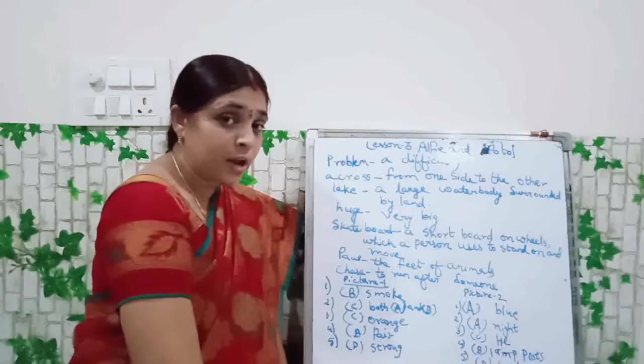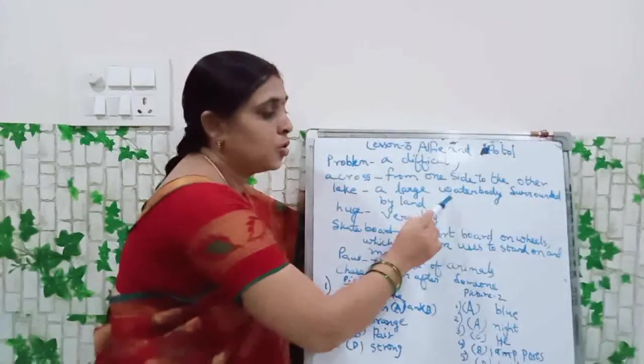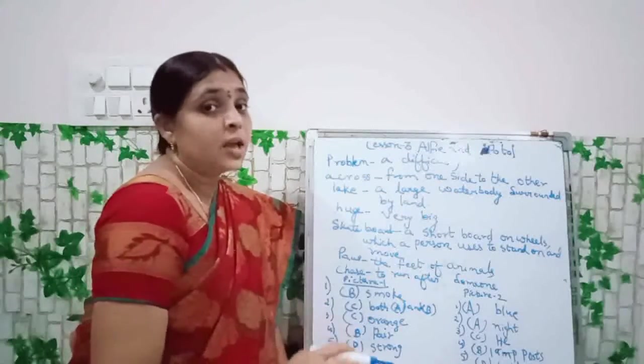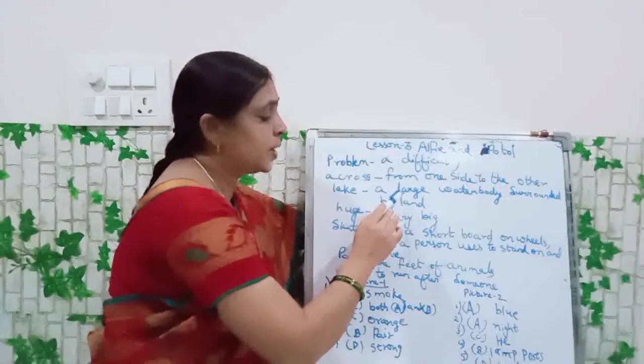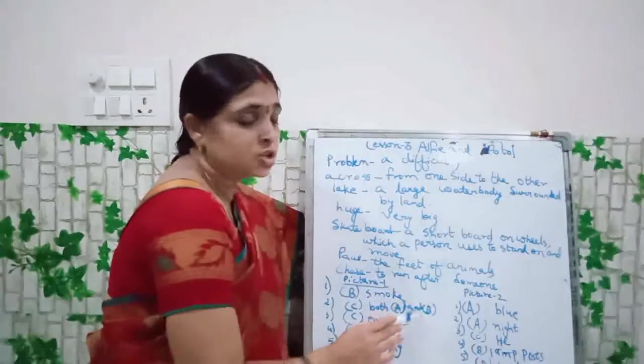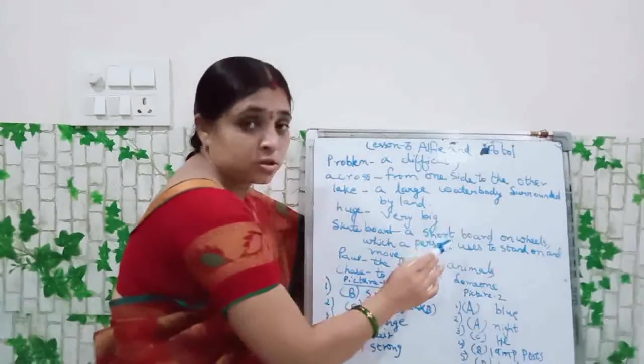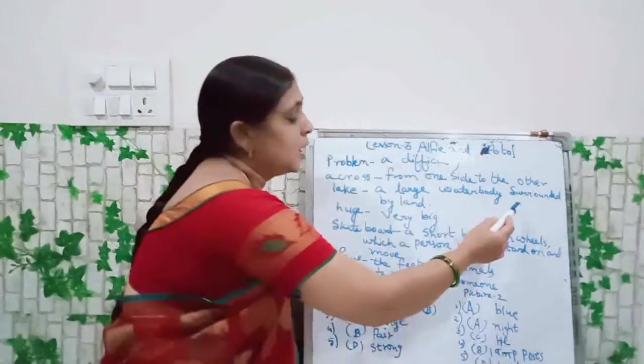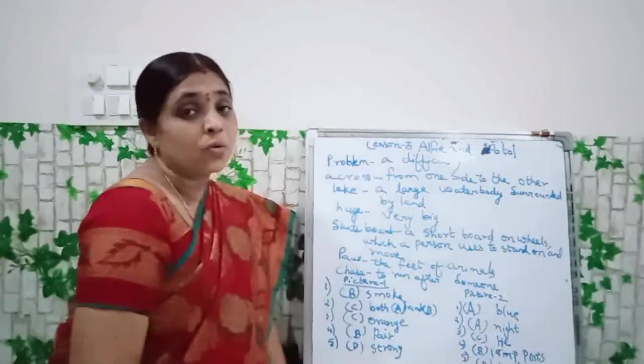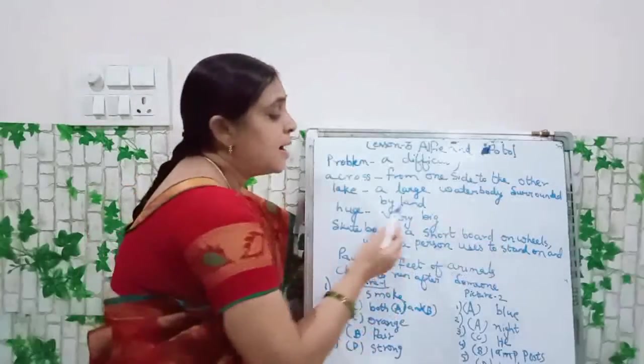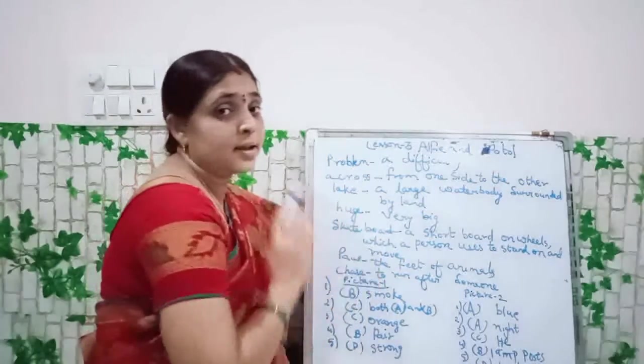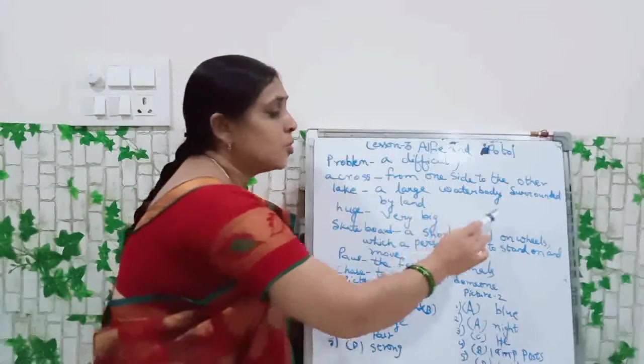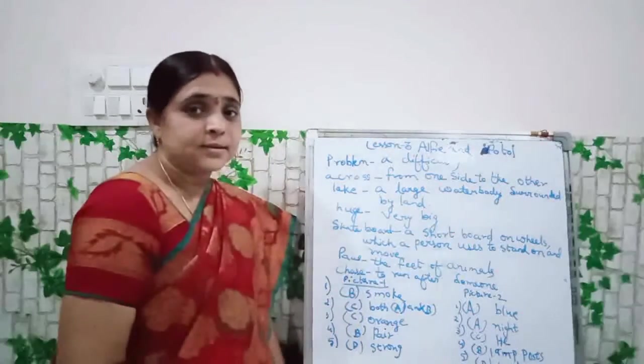Next, lake. What is the meaning of lake? A large water body surrounded by land. What is the spelling of large? L-A-R-G-E. Large. W-A-T-E-R. Water. B-O-D-Y. Body. Water body. Surrounded. S-U-R-R-O-U-N-D-E-D. Surrounded by land. L-A-N-D. Land. So lake means a large water body surrounded by land.